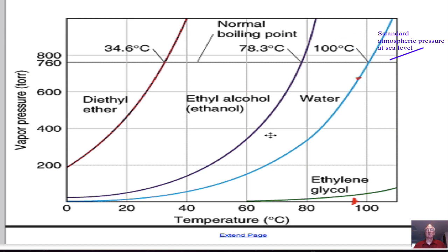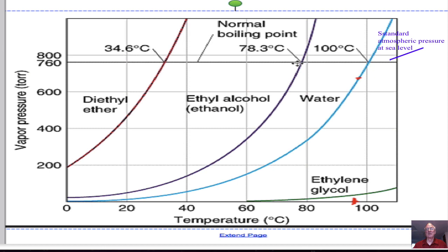Comparing other liquids to water: ethanol has weaker intermolecular forces than water, so it evaporates more rapidly and exerts more pressure at lower temperatures. The vapor pressure of alcohol equals standard atmospheric pressure at 78.3°C, so the boiling point of alcohol is 78.3°C. Diethyl ether, with even weaker forces, evaporates more rapidly and boils at a much cooler temperature — 34.6°C. Boiling takes place when the vapor pressure of the liquid equals the atmospheric pressure outside, so at standard atmospheric pressure of 760 mmHg, these temperatures are the boiling points of those liquids.